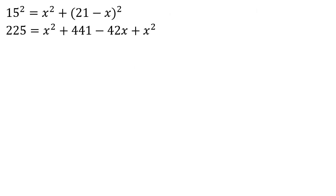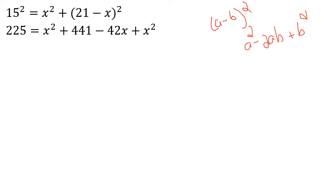Then: diagonal squared equals x squared plus (21 minus x) squared. Expanding (21 minus x) squared using a squared minus 2ab plus b squared: 21 squared is 441, 2ab is 2 into 21 into x which is 42x, plus b squared which is x squared. Combining: 2x squared minus 42x plus 441.